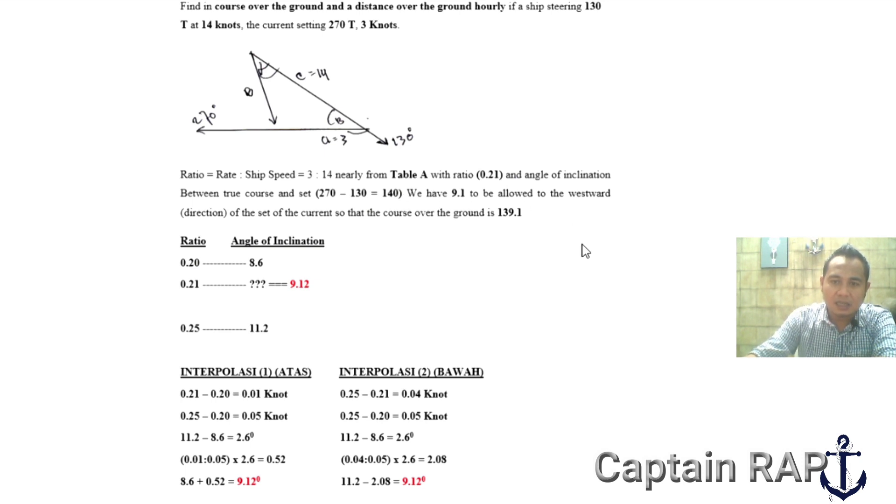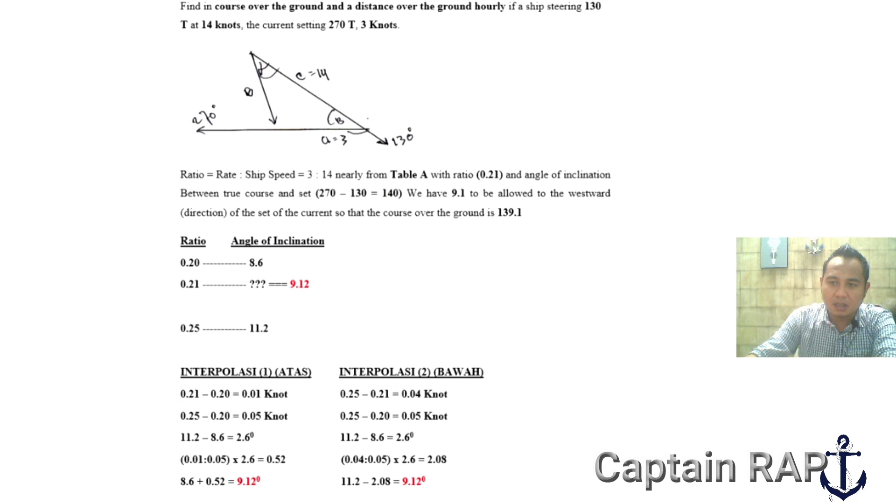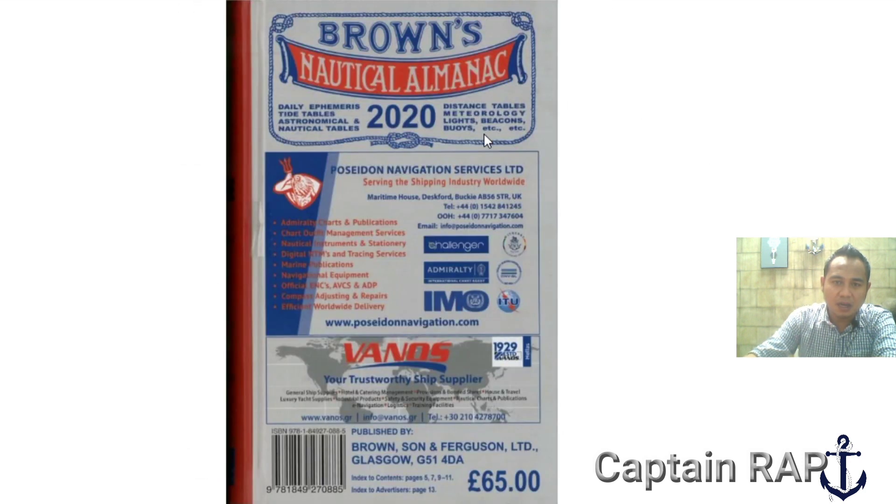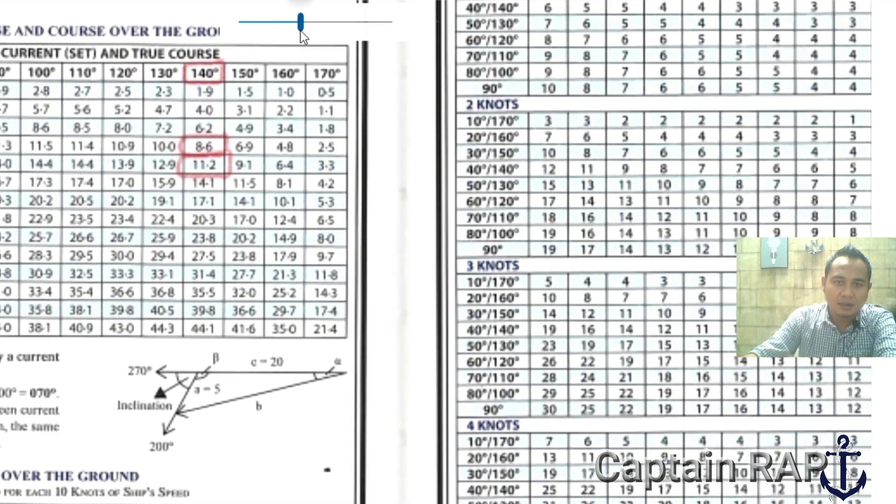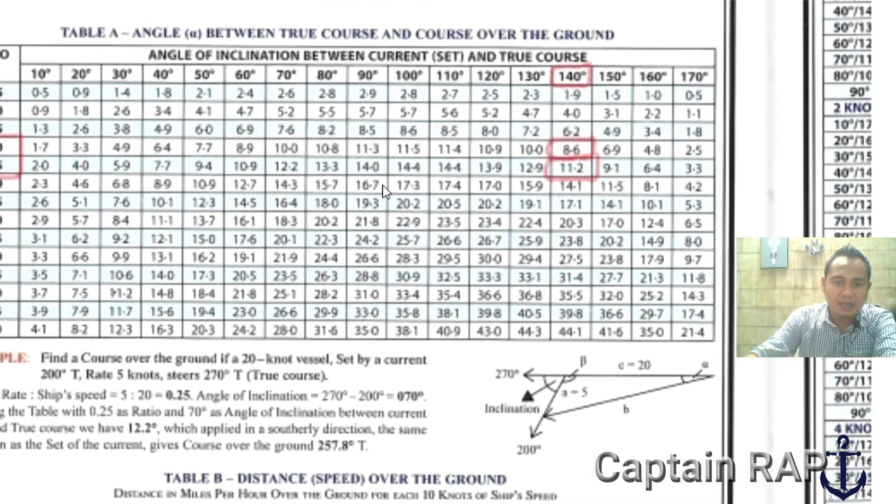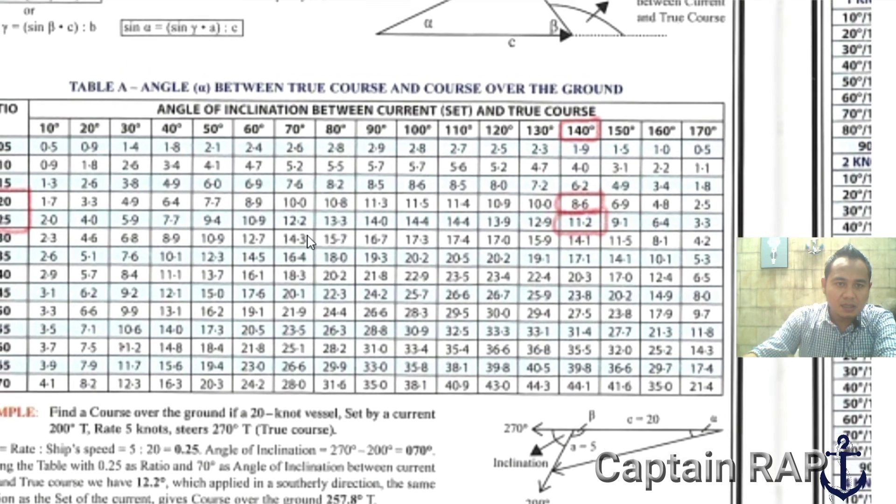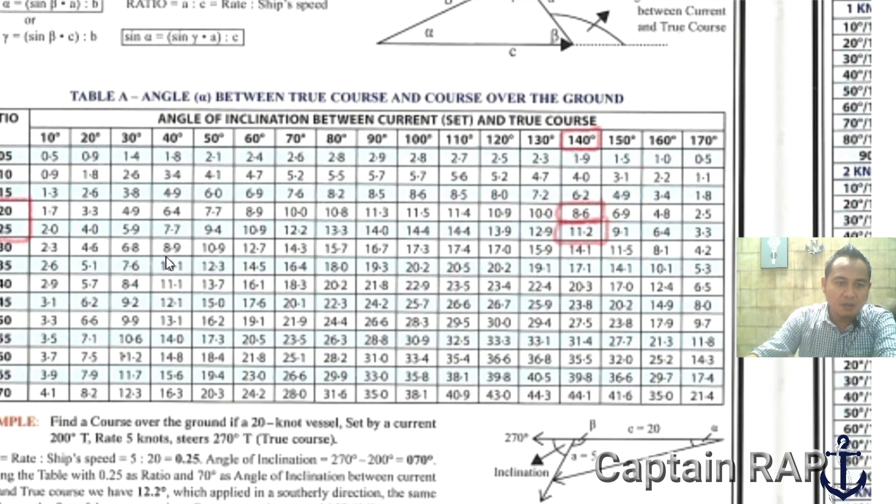Kalau sudah mendapatkan dua variable ini, ya rasio dengan angle of inclination, berarti kita sekarang selanjutnya menuju ke tabel A. Jadi saya masih seperti di video sebelumnya menggunakan Browns Nautical Almanac di tahun 2020. Tabel A itu ada di halaman 328. Nah inilah tabel A-nya, jadi teman-teman lihat di sini tabel A. Kemudian di video sebelumnya itu rasionya kebetulan tepat di angka 0.25, kalau 0.25 tentu gampang. Tetapi di soal ini kebetulan rasionya itu 0.21 yang mana angka itu tidak tersedia di sini.